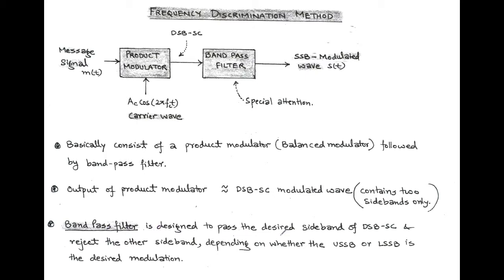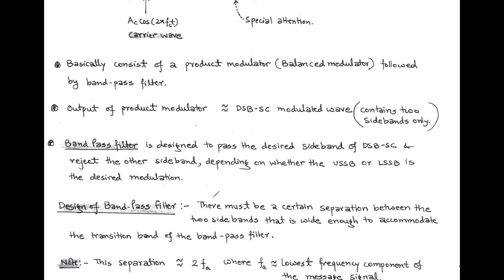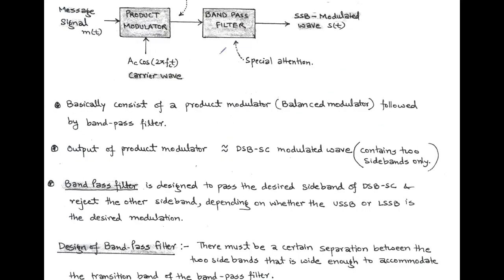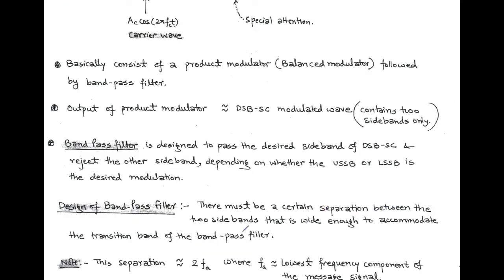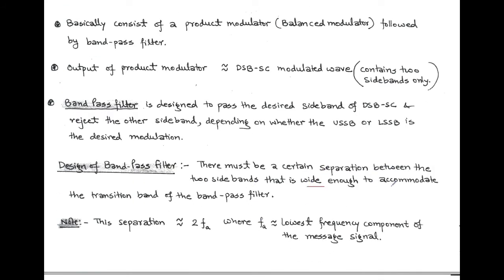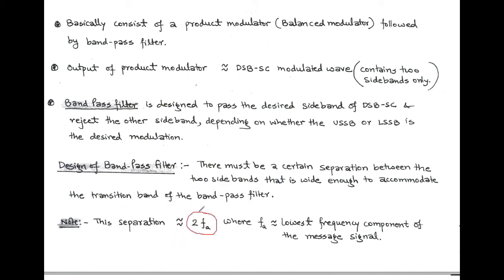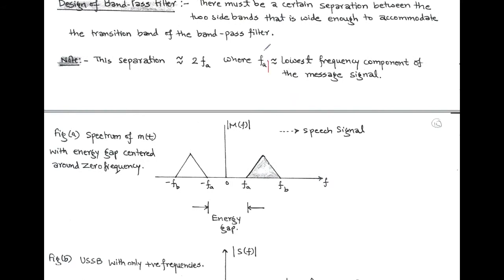The bandpass filter passes the desired sideband of the double sideband suppressed carrier and rejects the other sideband, depending on whether upper single sideband or lower single sideband is desired. From the design point of view, there must be a certain separation between the two sidebands. This separation must be wide enough to accommodate the transition band of the bandpass filter, and it is approximately equal to twice of F_A, where F_A is the lowest frequency component of the message signal.